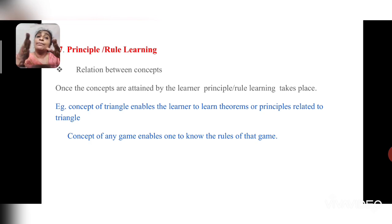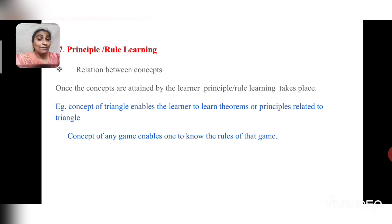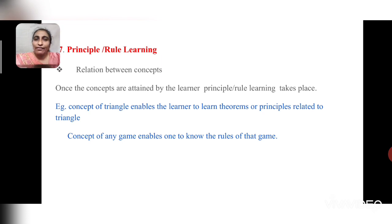The next level is principle or rule learning — a relation between various concepts. Linking many concepts leads to a principle. If a child knows the concept of a triangle, you can then teach him various theorems or principles related to it. Similarly, only if a child knows a game can you teach him the rules of how to play it.